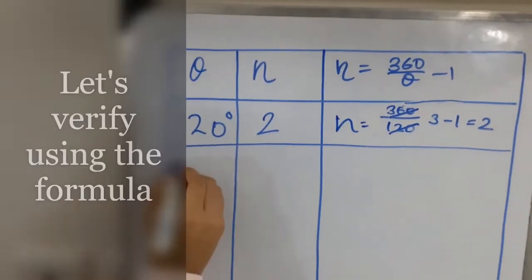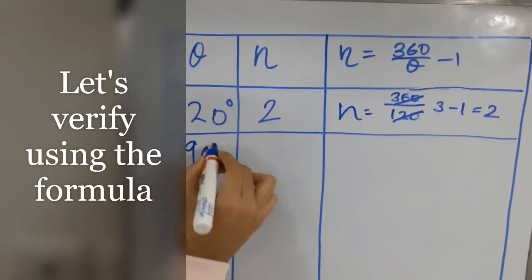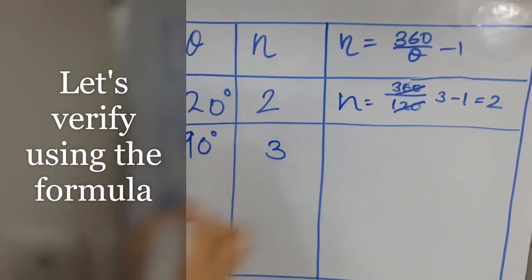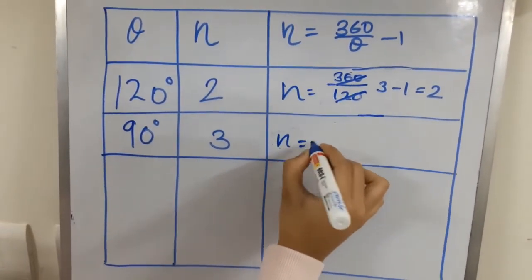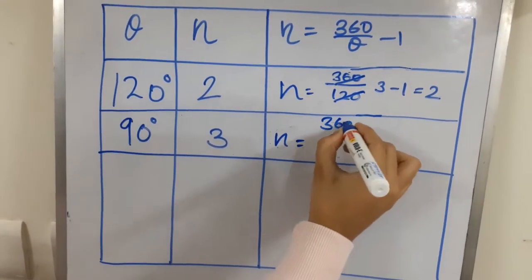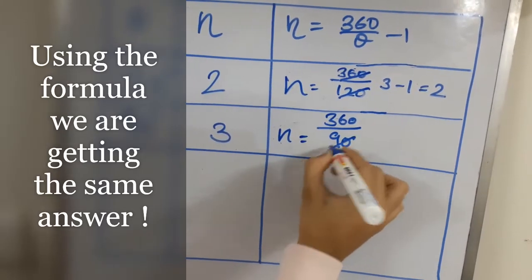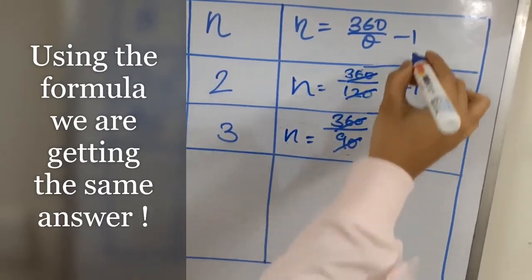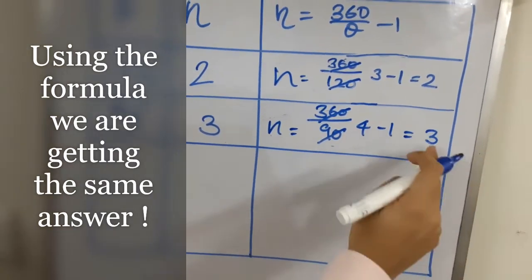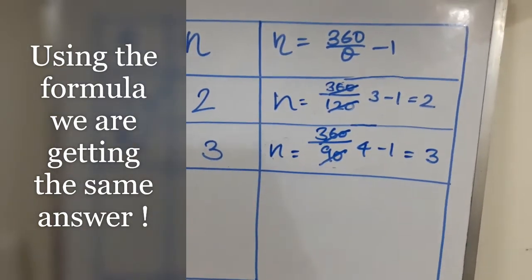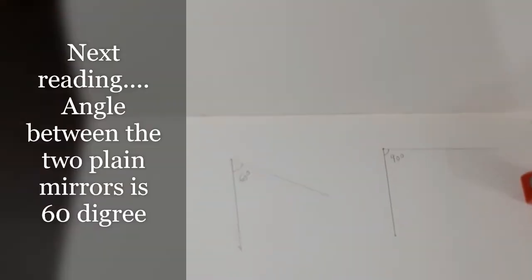We had placed the mirror at 90 degrees and we observed three images. Let us calculate n using the formula. 360 divided by theta which is 90, we get 4 minus 1 equals 3. So we got three number of images.